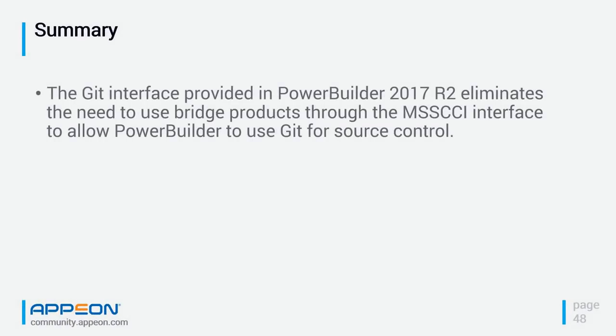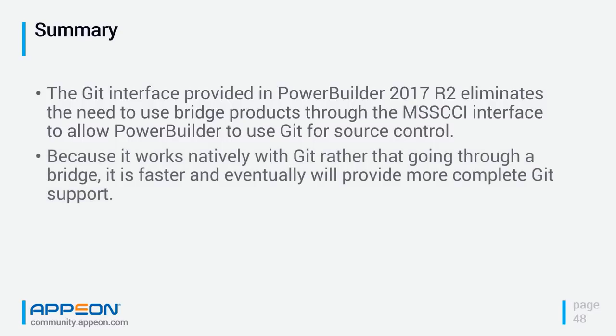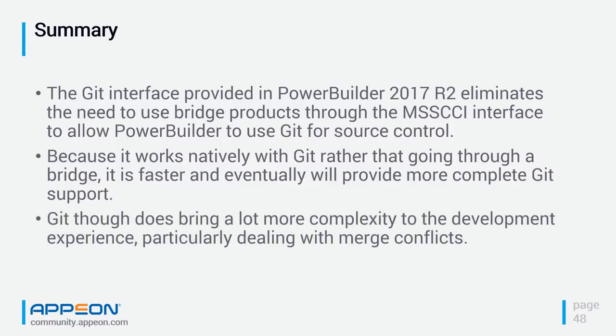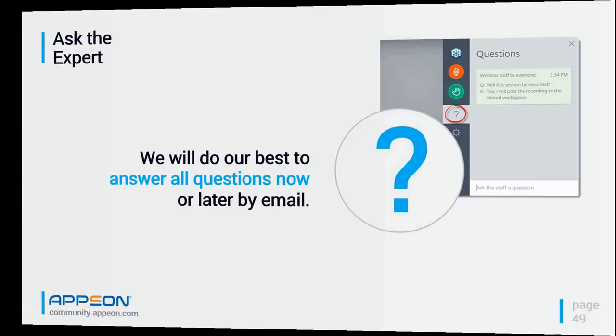In summary, the Git interface provided in PowerBuilder 2017 R2 eliminates the need to use bridge products through MSSCCI, allowing you to use Git natively. Because it is native, it is faster than bridge products and should provide more complete Git support. It does bring some complexity — particularly dealing with merge conflicts — although the likelihood appears lower than with Subversion. That's all for the presentation. Time for questions.